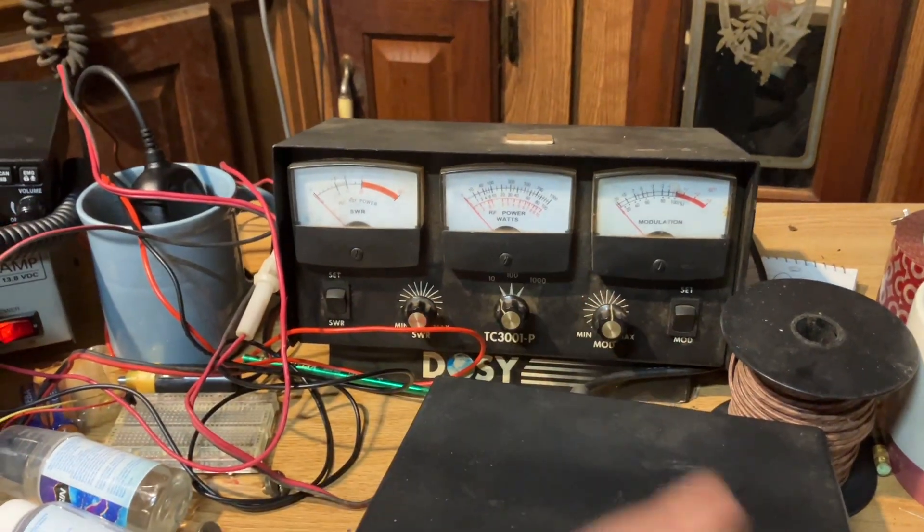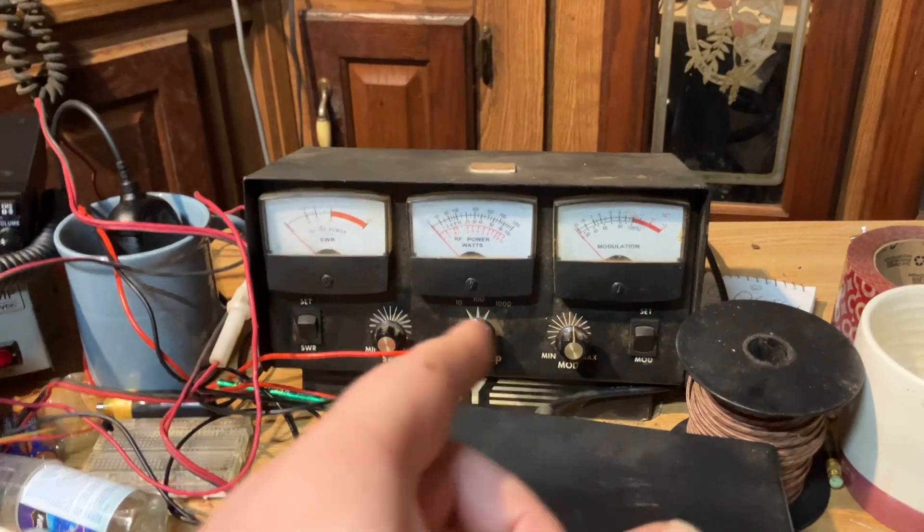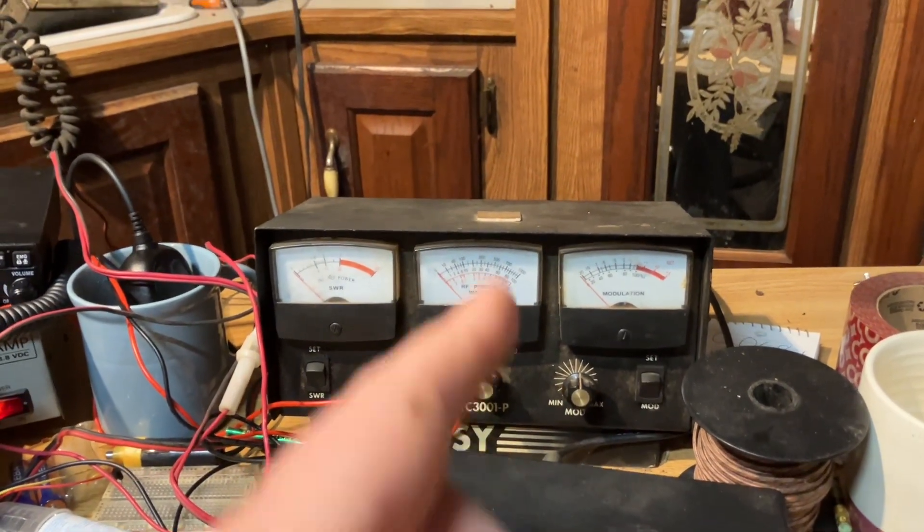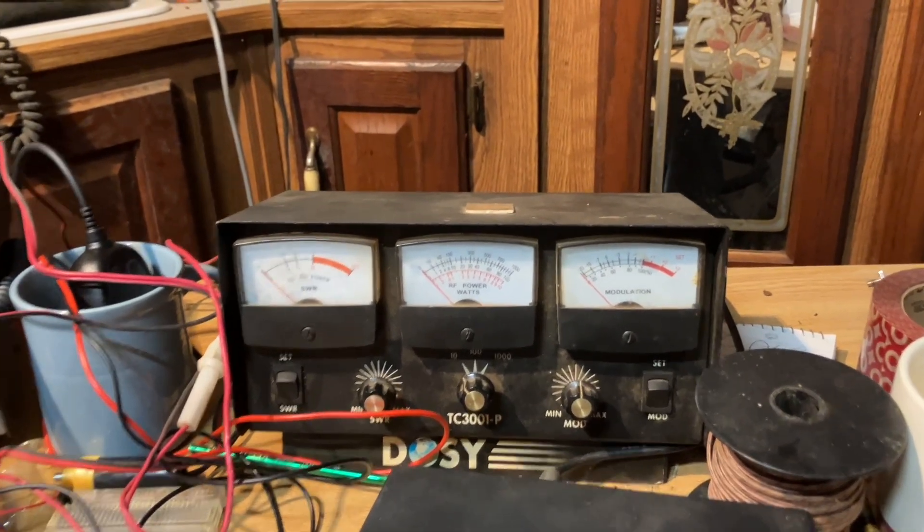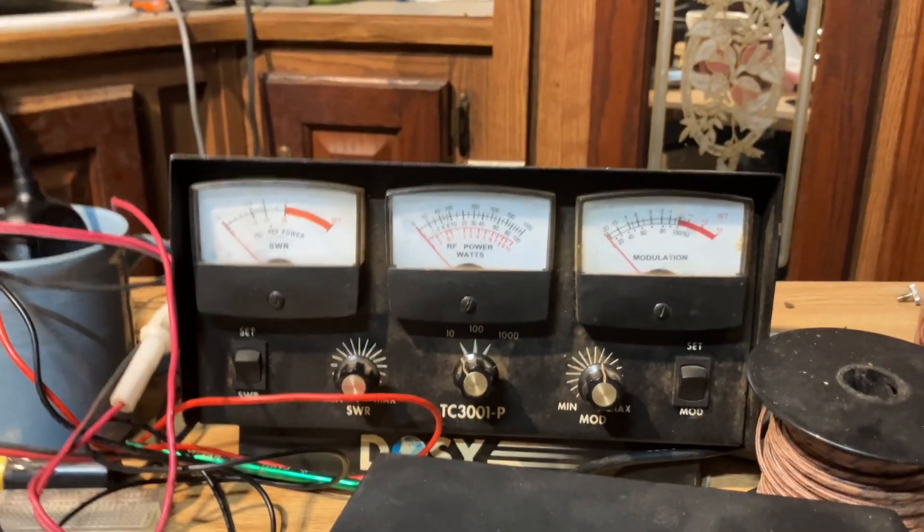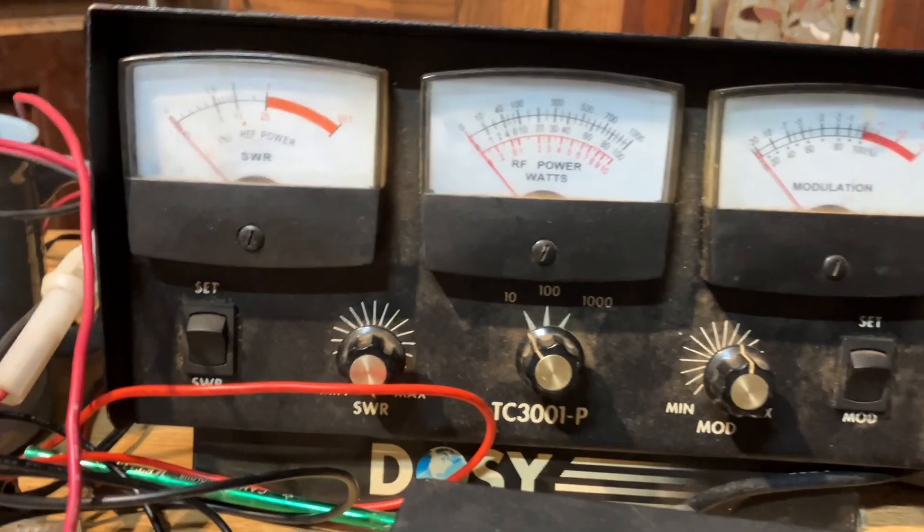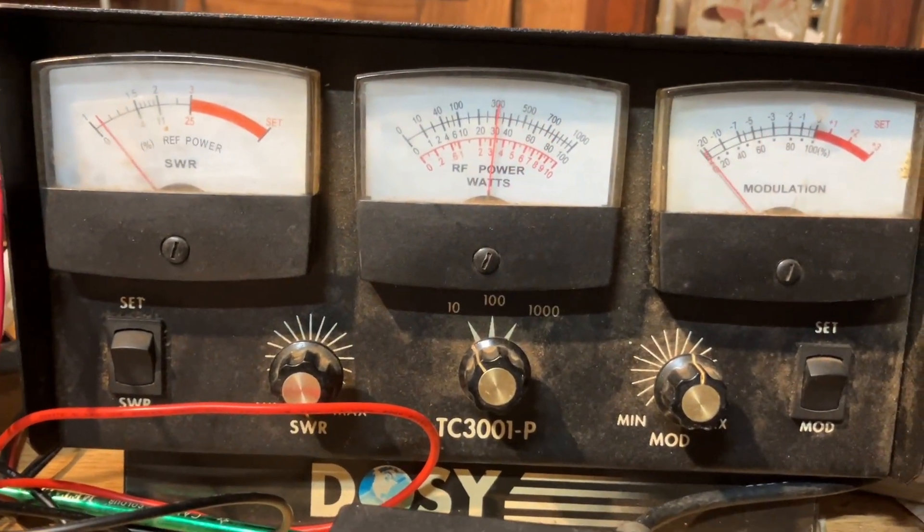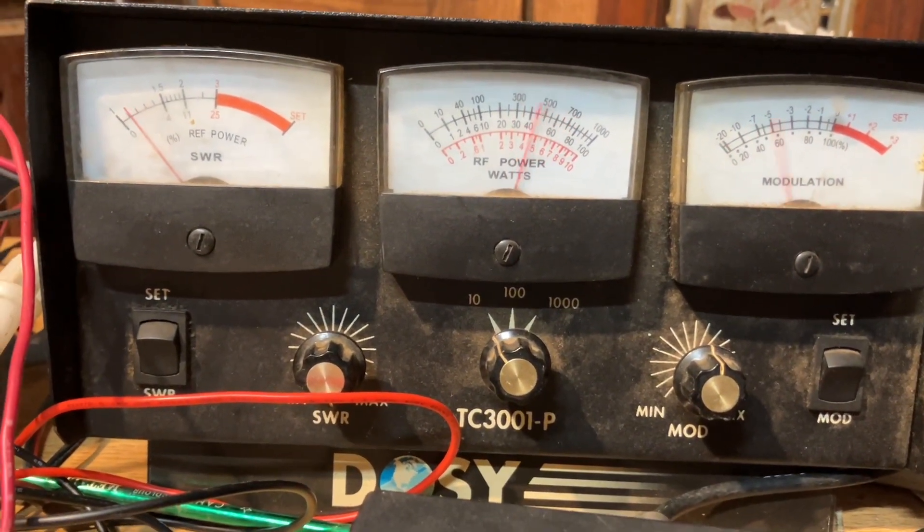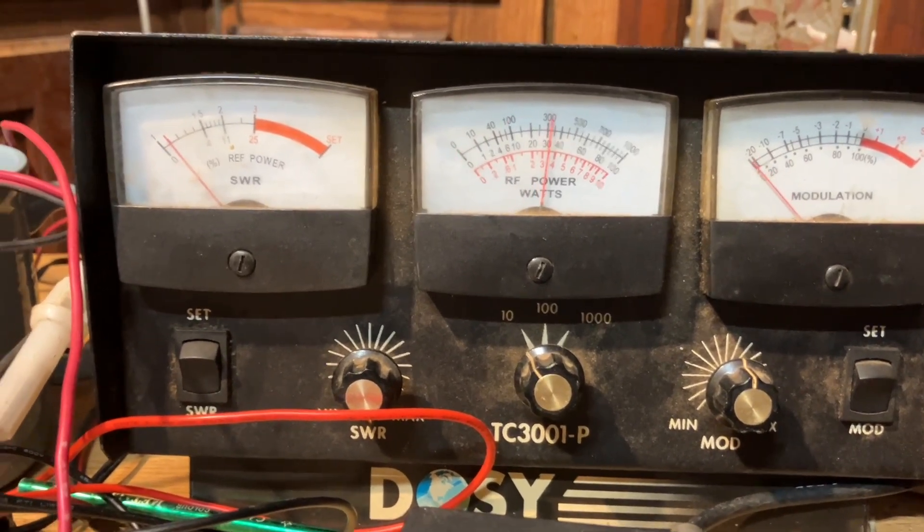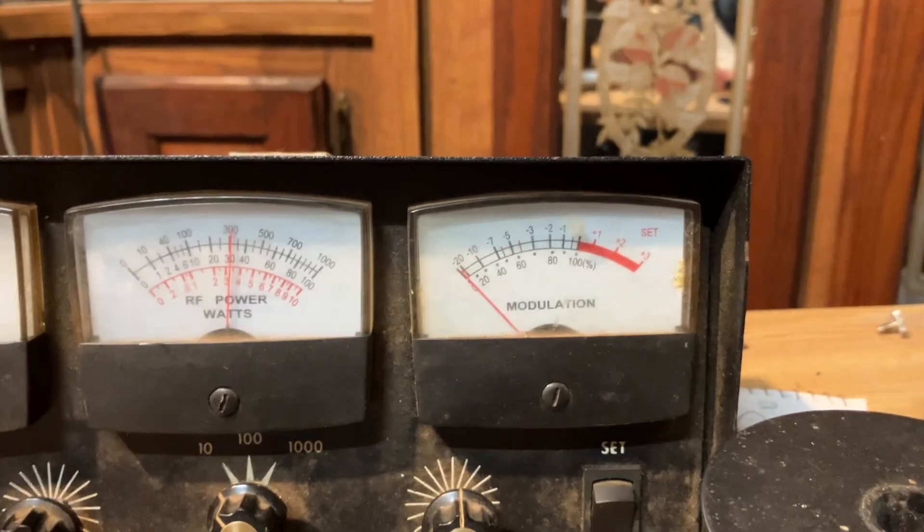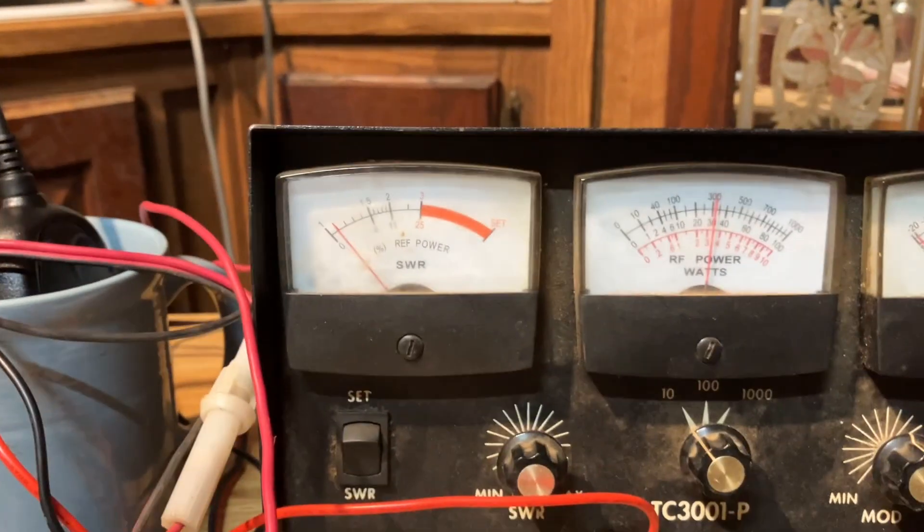At some point you may have picked up a watt meter and I want to show you the difference between AM and sideband on a meter, because if you're not careful you'll assume your sideband radio is broke. Right now I am on AM—that's amplitude modulation, most standard 40 watt radios. You can see that when I press the button, the push to talk button on the mic, we have a carrier. No modulation, of course, but a carrier.